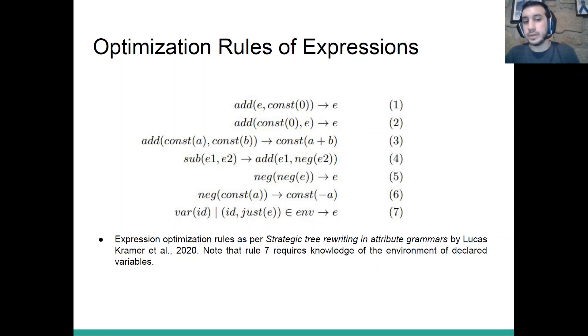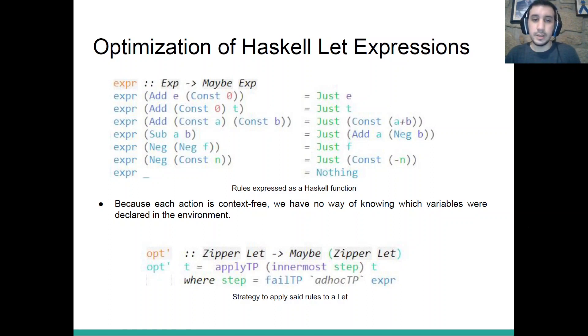The rule number seven is, however, a bit more complicated. This rule says that if we have a variable of name id and we have in our environment of declared variables, if we have the name id with a certain expression e, then we are replacing with the expression e. Here we are trying to replace a variable by its definition. For this, we have to look into the environment. We have to know contextual information. We need to know the environment around it to see if the variable is declared.